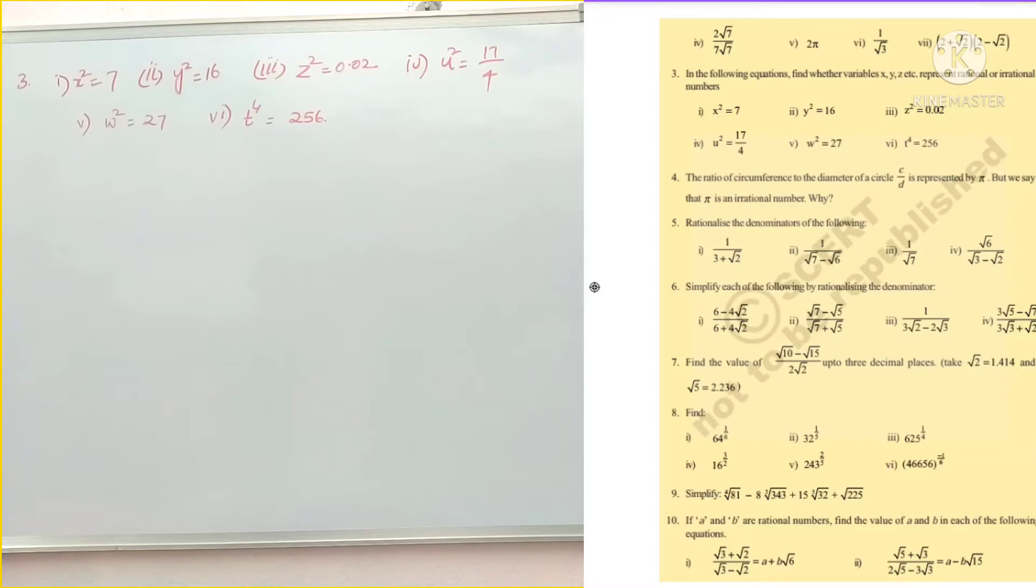Okay, so totally six problems are given and we have to state whatever it is x, y, z, u, v, w, t. These are rational or irrational. Second problem we have numbers and we have to solve the problem. So we have to solve the variables x square, y square, rational or irrational.